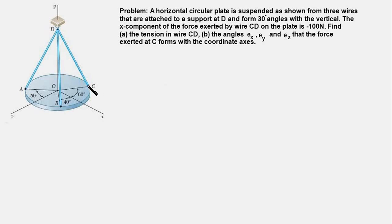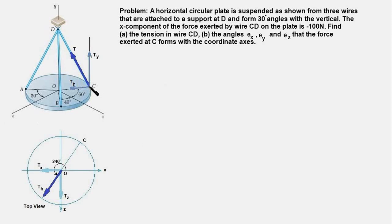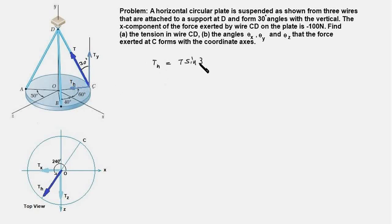We show the force T acting at point C on the plate due to the tension in the wire. This force is resolved into a vertical component Ty and a horizontal component Th. Note that Th is the horizontal component of T, not the x-component. The angle shown is 30 degrees, so the horizontal component Th = T·sin(30°) = T/2.